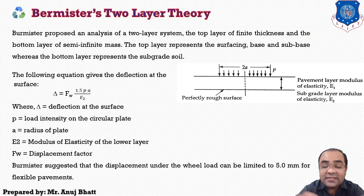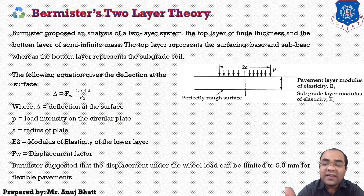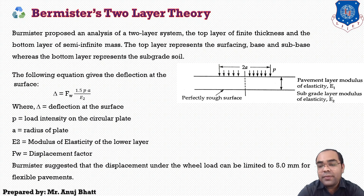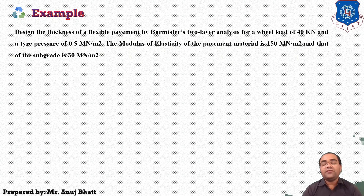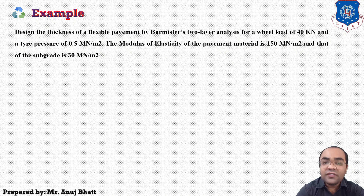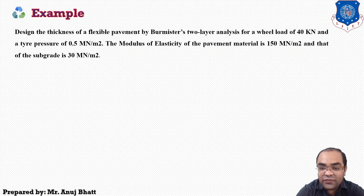Burmister suggested that the displacement under the wheel load can be limited to 5 millimeters for flexible pavement, so the permissible displacement is 5 mm. Let's see an example: design the thickness of a flexible pavement by Burmister's two-layer analysis for a wheel load of 40 kilonewtons and a tire pressure of 0.5 MN/m². The modulus of elasticity of the pavement material is 150 MN/m² and that of the subgrade is 30 MN/m².